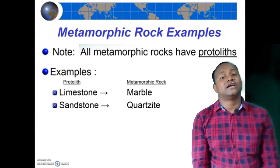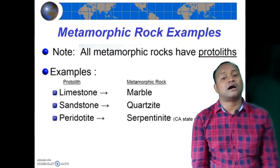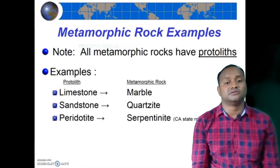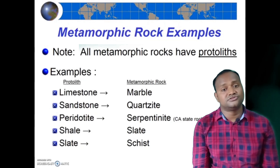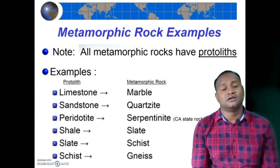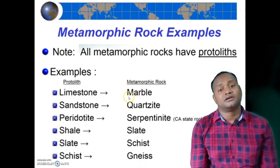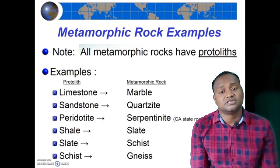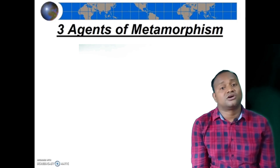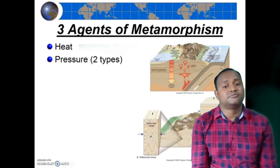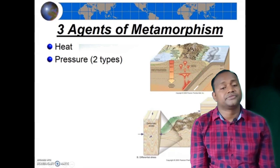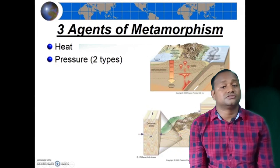When high pressure and temperature are applied over limestone, it is converted into marble. When high pressure and temperature are applied over granite, it is converted into gneiss. Another example is slate. Metamorphic rocks are normally very strong in nature.